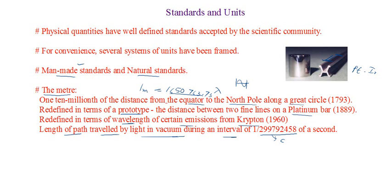Most of the base quantities have now been defined in terms of natural standards. The platinum-iridium bar is an example of a man-made standard, while the krypton and light-speed definitions are examples of natural standards. Similarly, the unit of time has also gone through a number of definitions and revisions, and we now define the second in terms of atomic clocks.